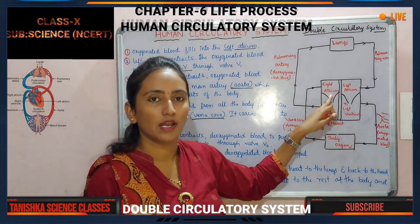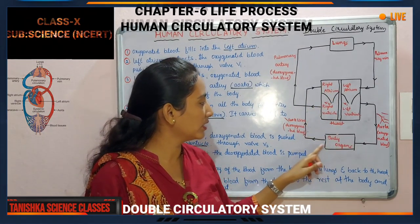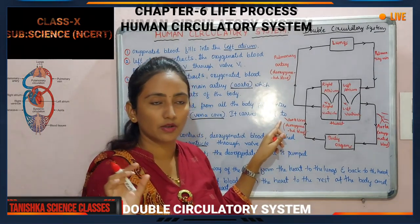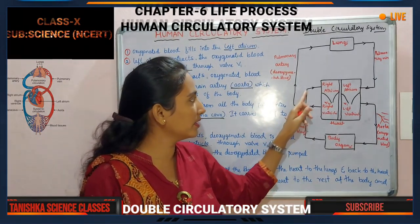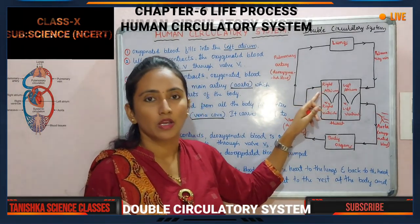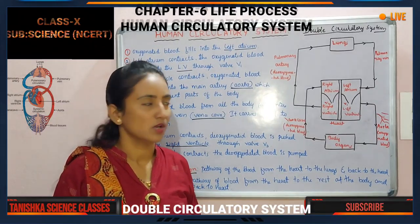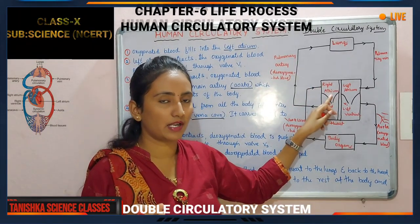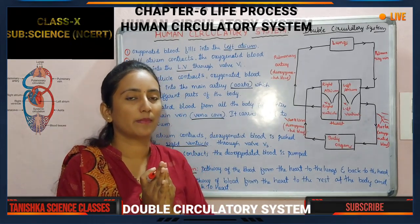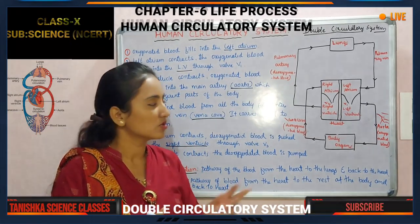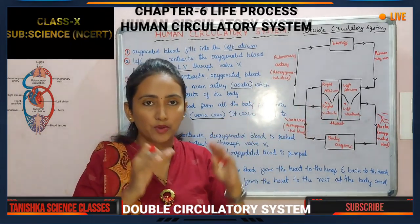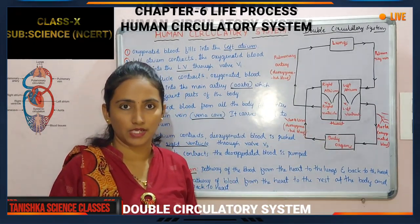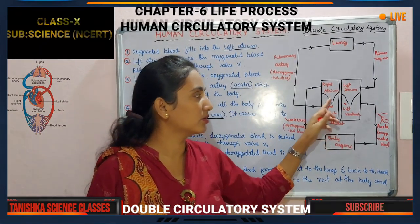Through the body organs, the deoxygenated blood comes to the main vein called the vena cava. After that, it comes back to the heart — specifically to the right atrium. Through the body organs, it is collected into the vena cava and it comes to the right atrium.